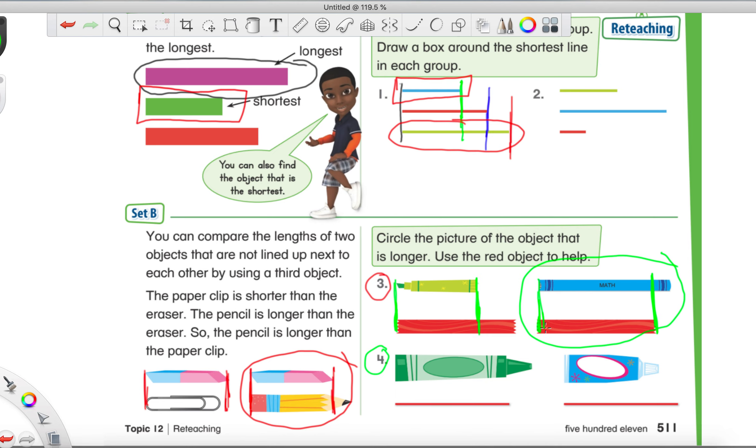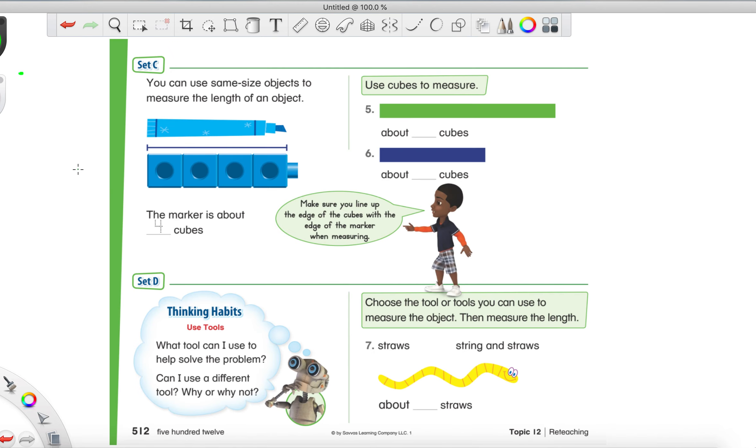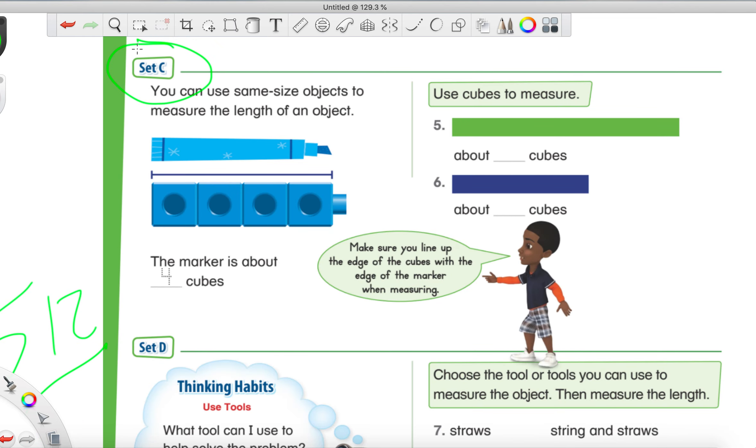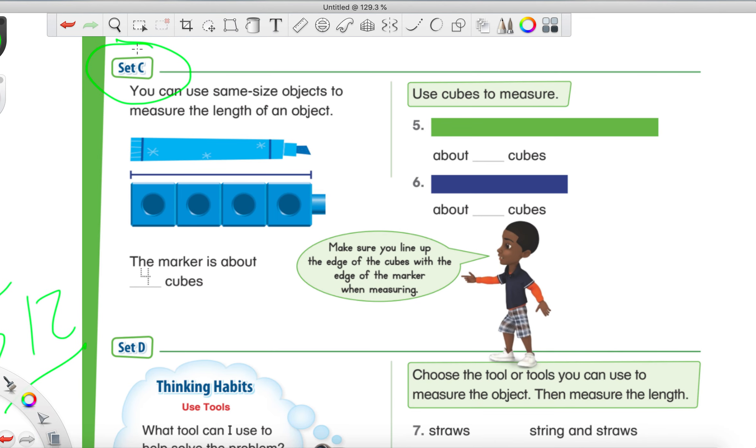So now we're just going to flip to the next page. So now we're on page 512. So I'm going to write real big, real quick. So 512, that is the page we're on right here. So we're going to do set C first. So zoom on in here. There we go. Much better, much better.